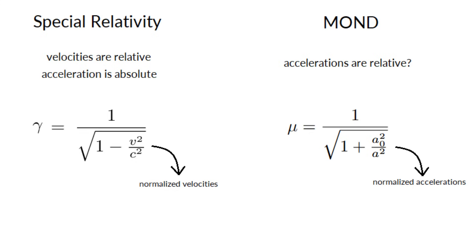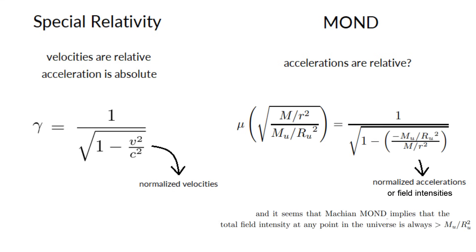Lorentz invariance implies that the speed of light is constant in all inertial frames, and it seems that Machian-MOND's implies that the total field intensity at any point in the universe is always greater than to that of the rest of the masses of the universe.